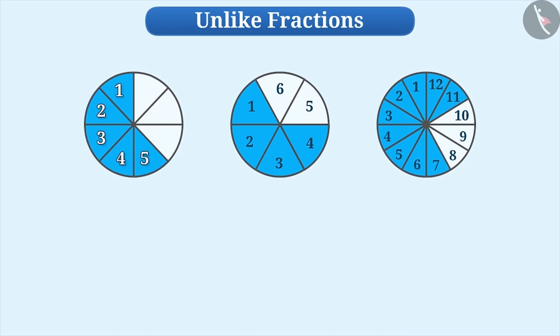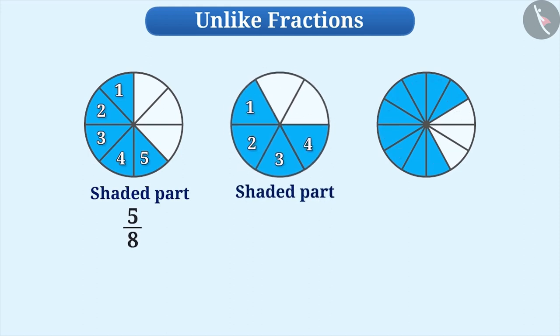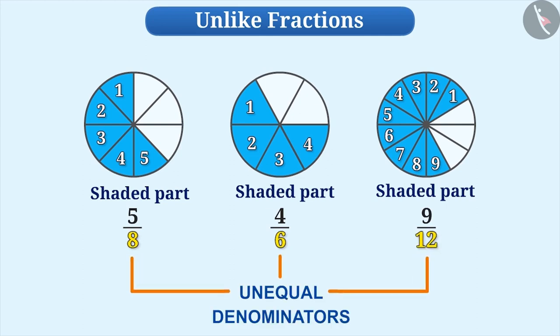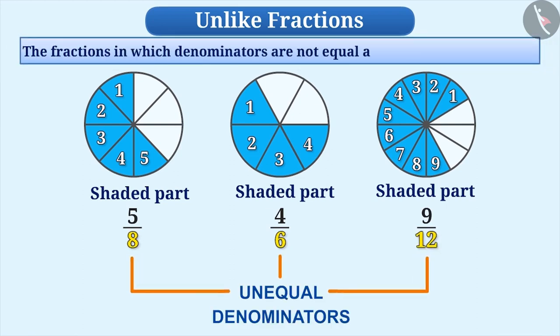Since 5 out of 8 are shaded in the first figure, the fraction of the shaded parts can be represented as 5 by 8. Similarly, the shaded part of the second figure is 4 by 6 and the third is 9 by 12. These fractions with different denominators are called unlike fractions. Fractions in which denominators are not equal are called unlike fractions.